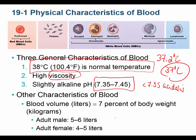Blood volume depends on body size. Males typically have 5–6 liters and females 4–5 liters, but it can range from about 3 liters in small individuals to 7 liters in large individuals.